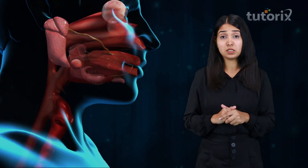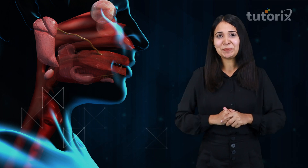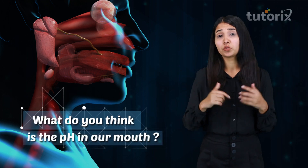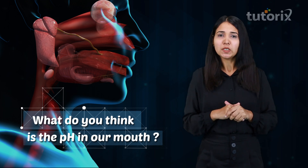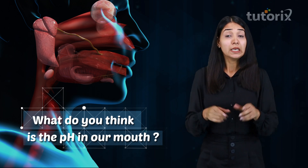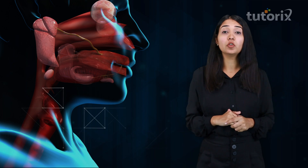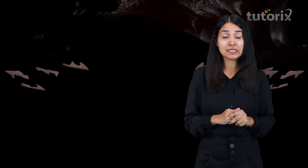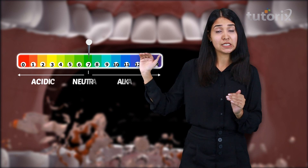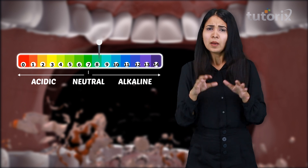Talking about our own mouth, the pH in our mouth is more than 7. This is because the saliva present in the mouth is basic in nature, so the pH is toward the basic range. But this does get affected when we eat food.